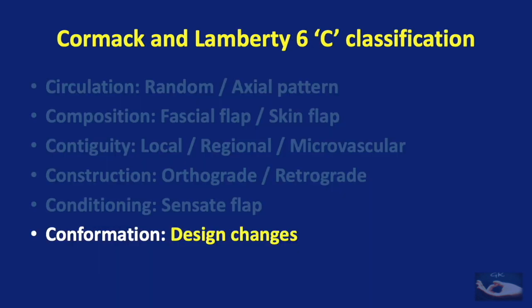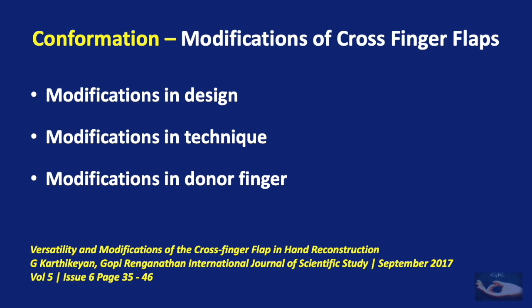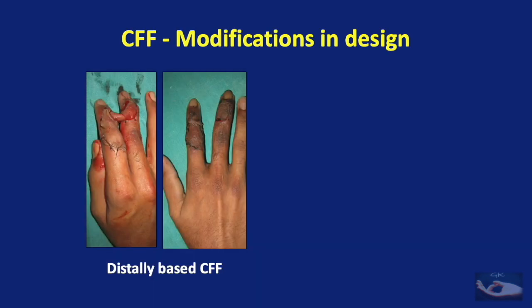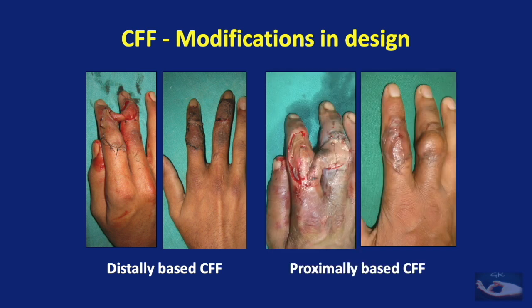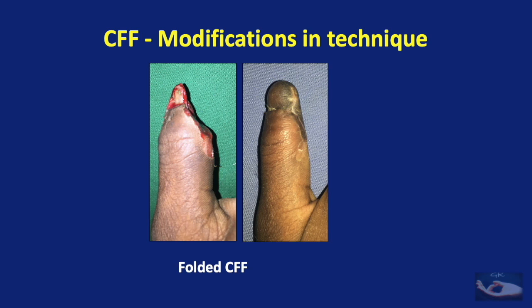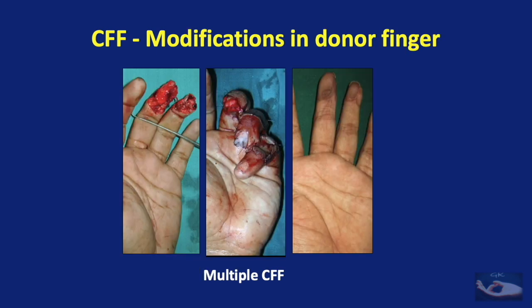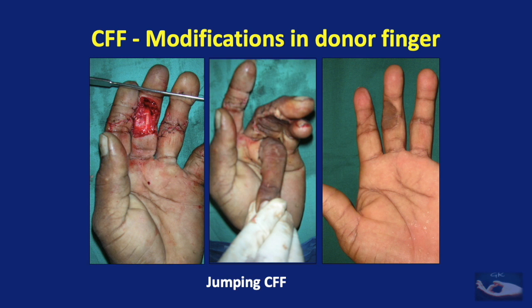Finally, flaps can also be classified based on changes made to the design of the classical flap — conformation. The best example would be modifications of the cross finger flap, the commonest intrinsic flap of the hand. Modifications can be in the design (distally or proximally based cross finger flap), the technique (folded cross finger flap), or the donor finger (double cross finger flap or jumping cross finger flap).